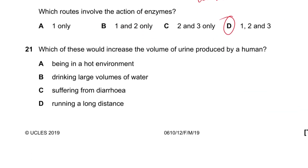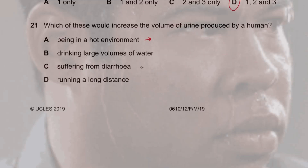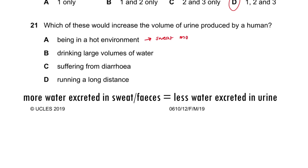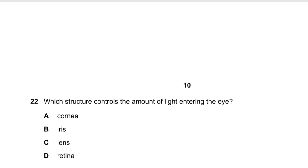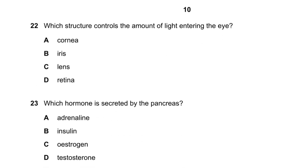Question 21: Which of these would increase the volume of urine produced? Being in a hot environment — no, you sweat more so less urine. Drinking large volumes of water — yes, more water to excrete. Suffering from diarrhea — no, water leaves through feces. Running a long distance — no, you sweat more and water leaves in sweat.